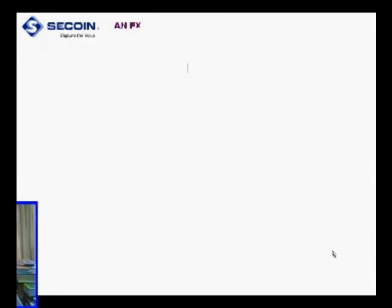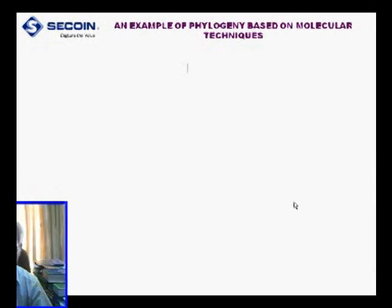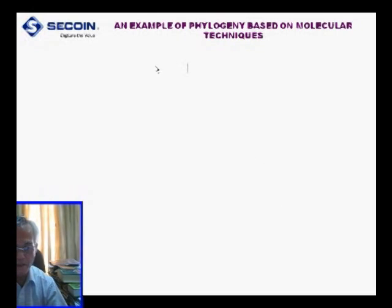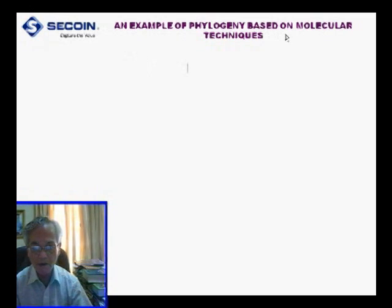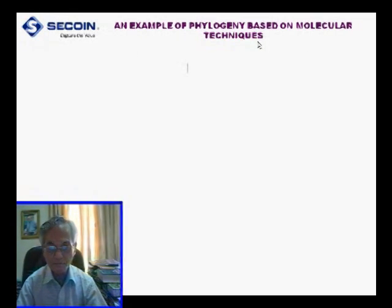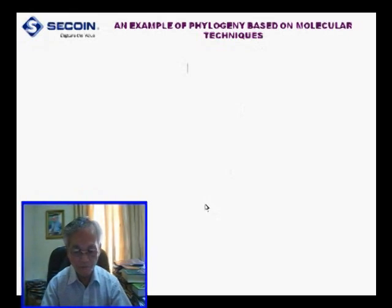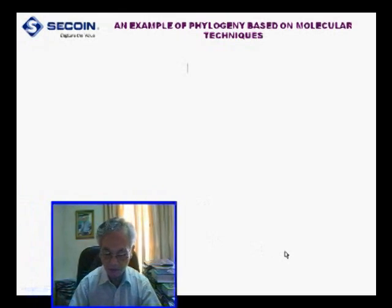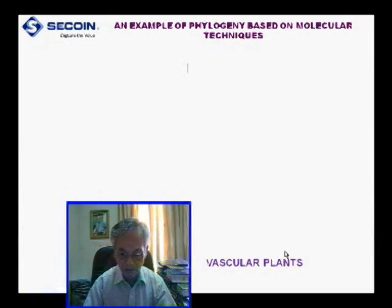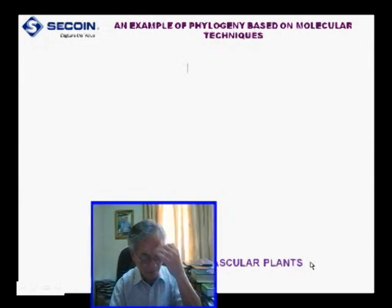Before talking about the third answer to the question from our previous slide, I would like to begin with an example of phylogenetics based on molecular technique. Our phylogenetic tree begins from the base — it is a vascular plant, the root of this phylogenetic tree.